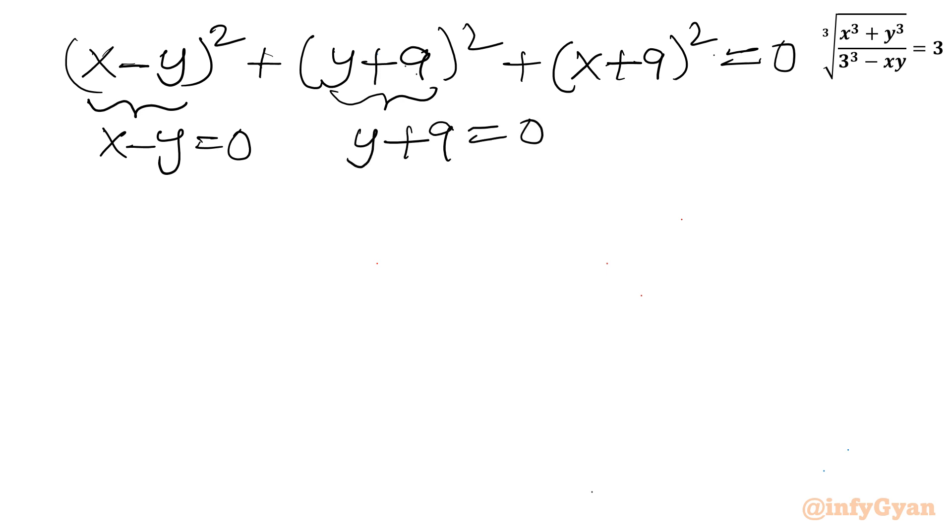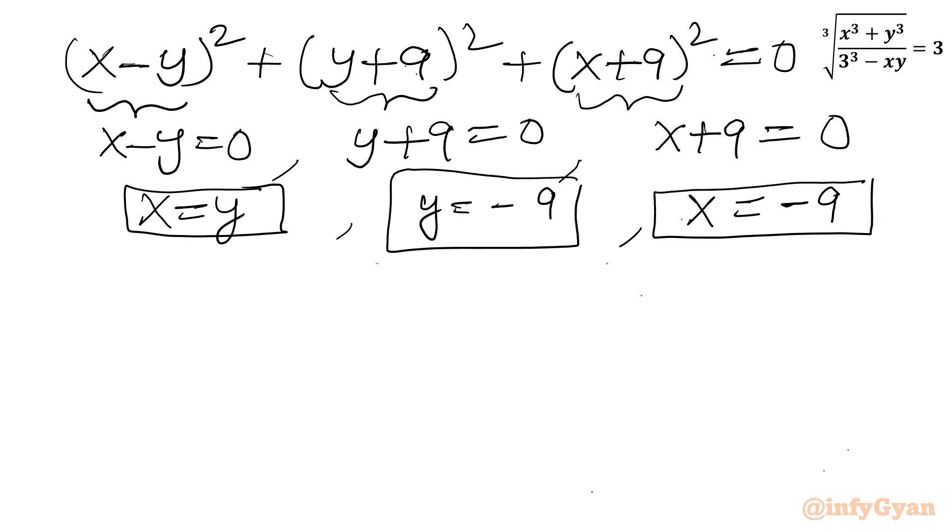Now I will consider equation second. So this is x minus y whole square plus y plus 9 whole square plus x plus 9 whole square equal to 0. Sum of squares equal to 0. We have to consider x minus y will be 0. So from here I can write x equal to y. From here I can write y equal to negative 9. So conclusion from here we can write x comma y. It should be negative 9 comma negative 9.